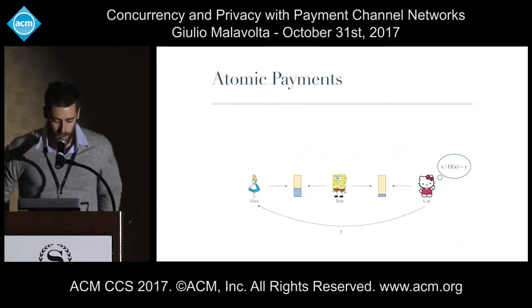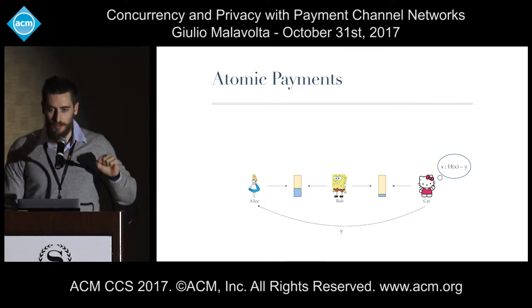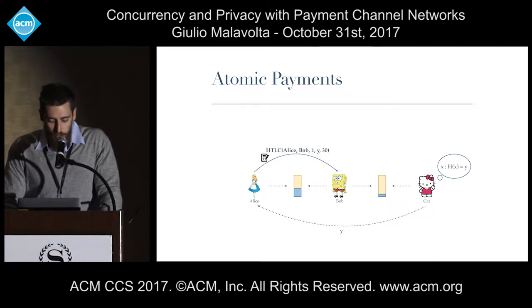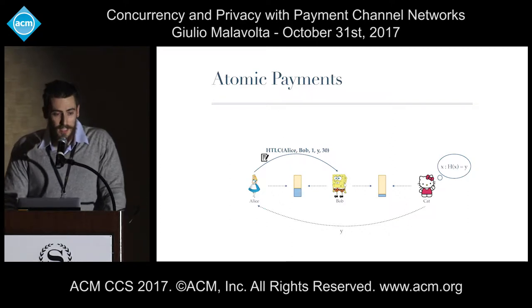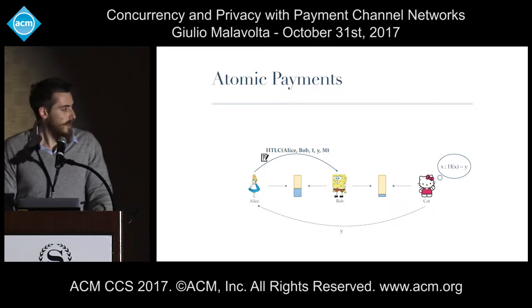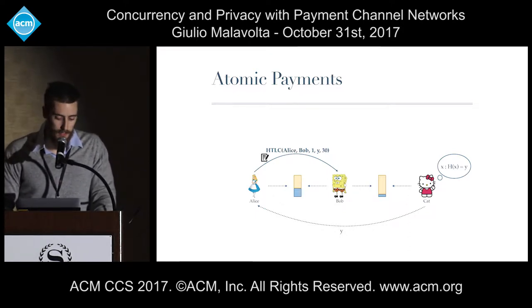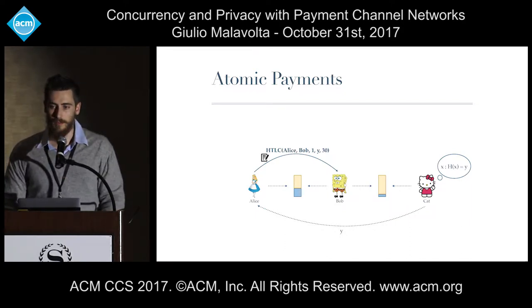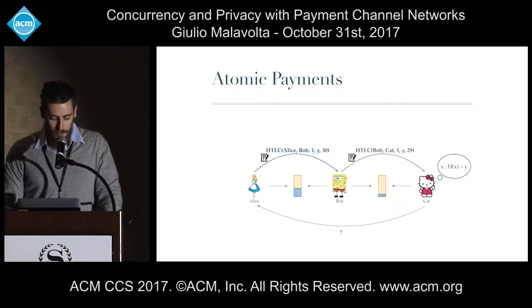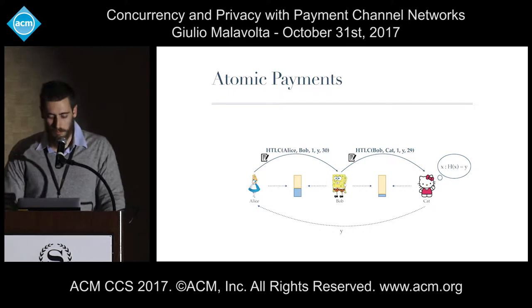So how does this help ensure atomicity? Instead of just sending one Bitcoin to Bob, the first thing we do is initialize a random value X and compute the corresponding image Y. Instead of doing the naive thing, Alice sends an HTLC contract to Bob saying she will transfer one Bitcoin to Bob if Bob can provide a valid preimage of Y within 30 days. At this point, Bob cannot redeem the payment yet because the value of X is currently unknown to him. Now Bob does exactly the same thing, except he uses a lower timeout — let's say 29 days.